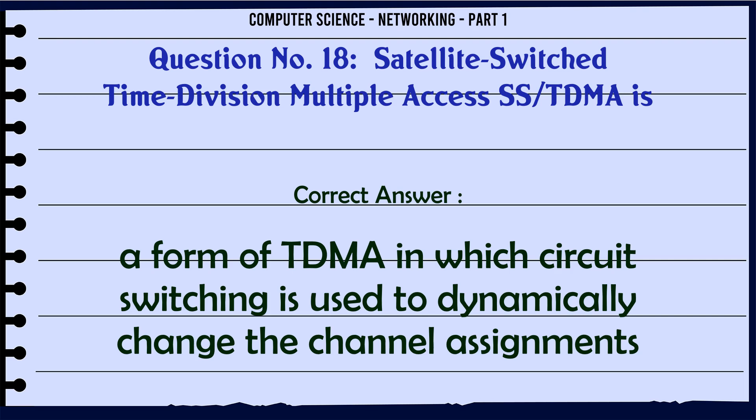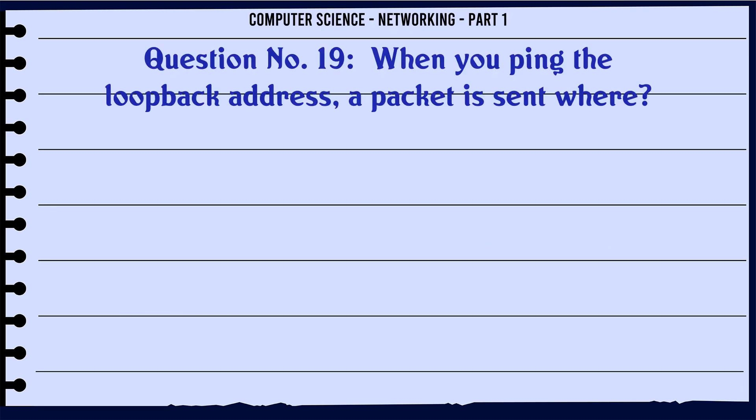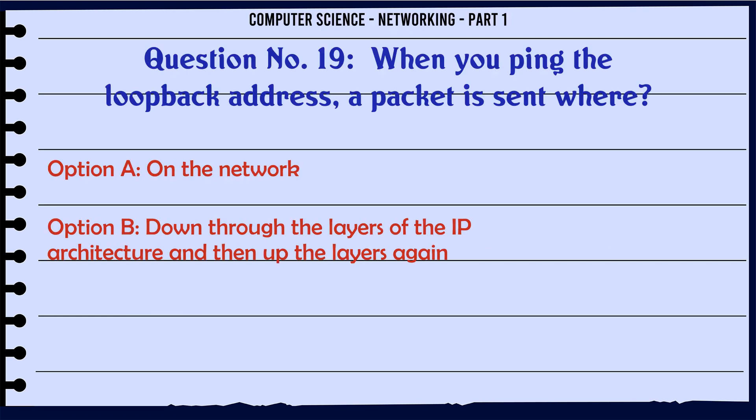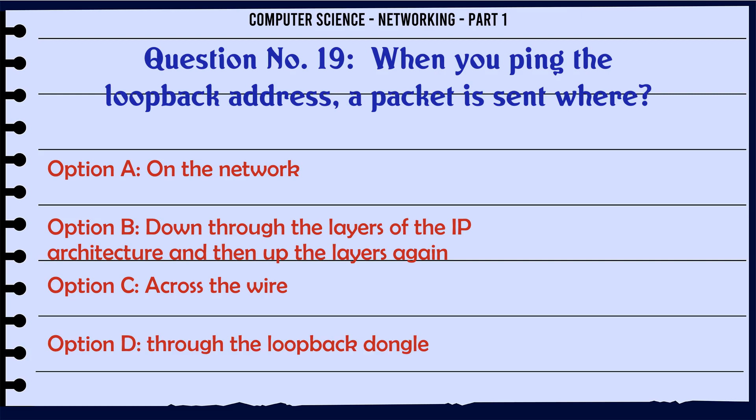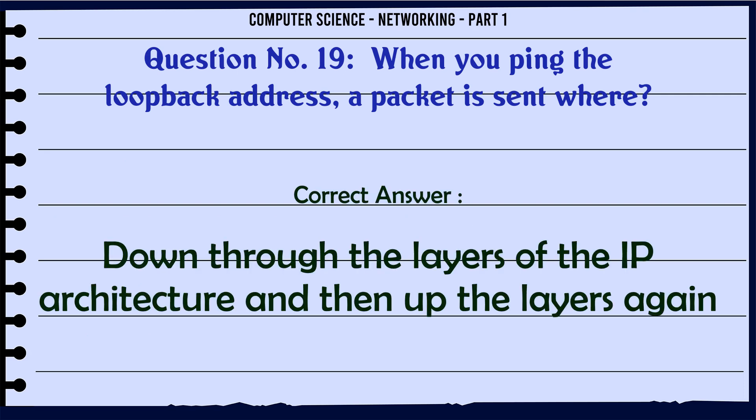When you ping the loopback address, a packet is sent where? A. On the network. B. Down through the layers of the IP architecture and then up the layers again. C. Across the wire. D. Through the loopback dongle. The correct answer is: Down through the layers of the IP architecture and then up the layers again.